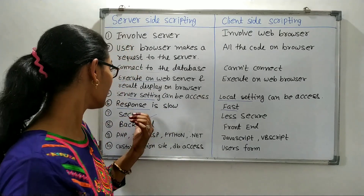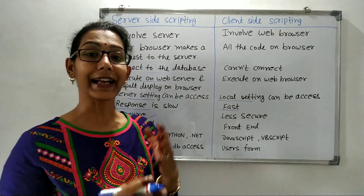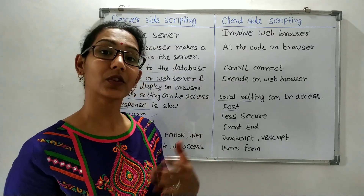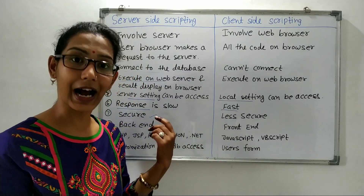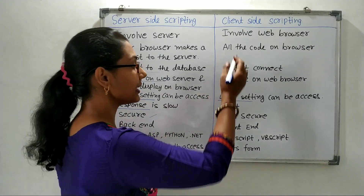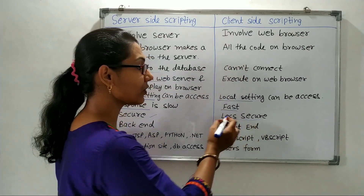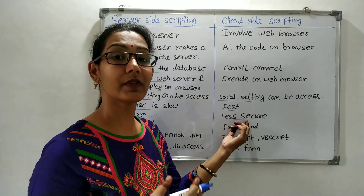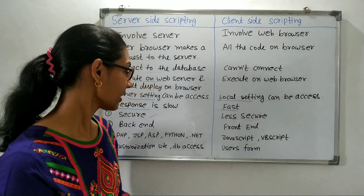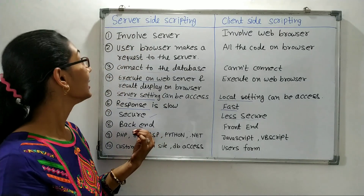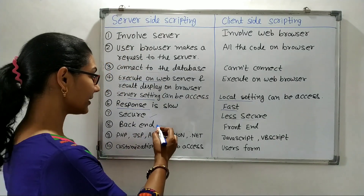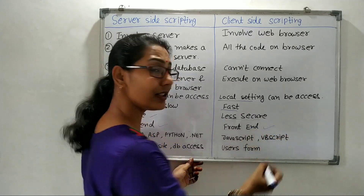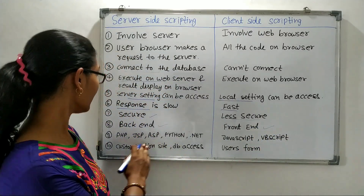The seventh difference is that server-side scripting is very secure because its code execution is not visible to users — it is hidden from the user. But client-side scripting is less secure because the code is visible to the users. The eighth difference is that server-side scripting is used as the back-end, while client-side scripting is used as the front-end.